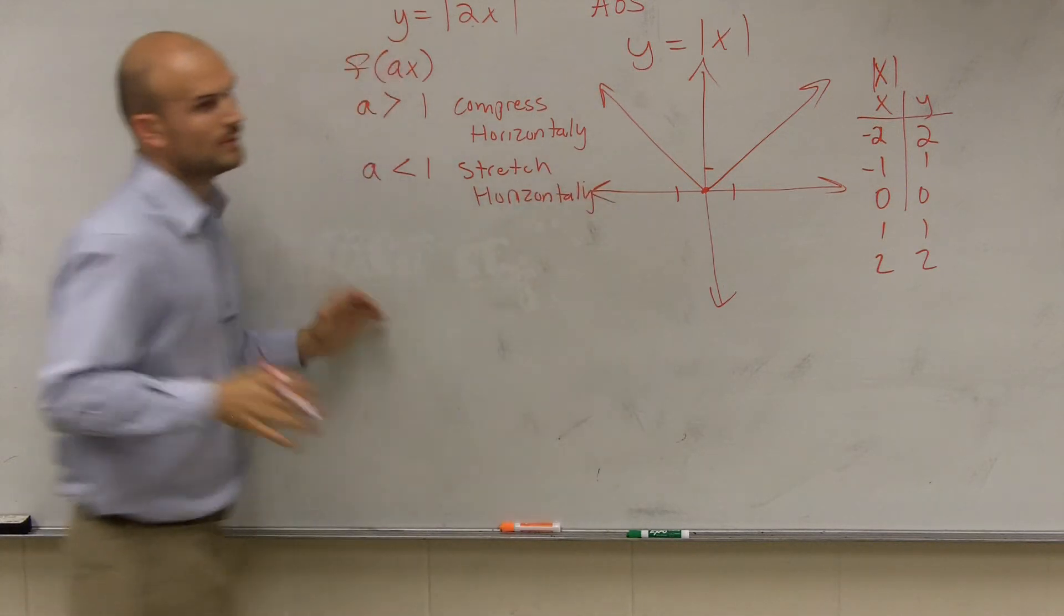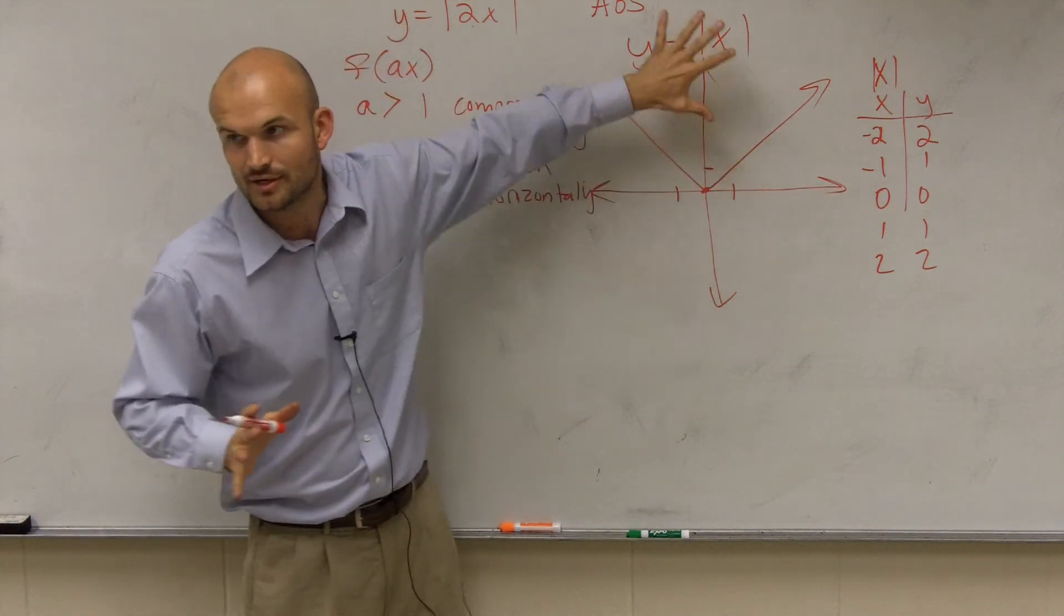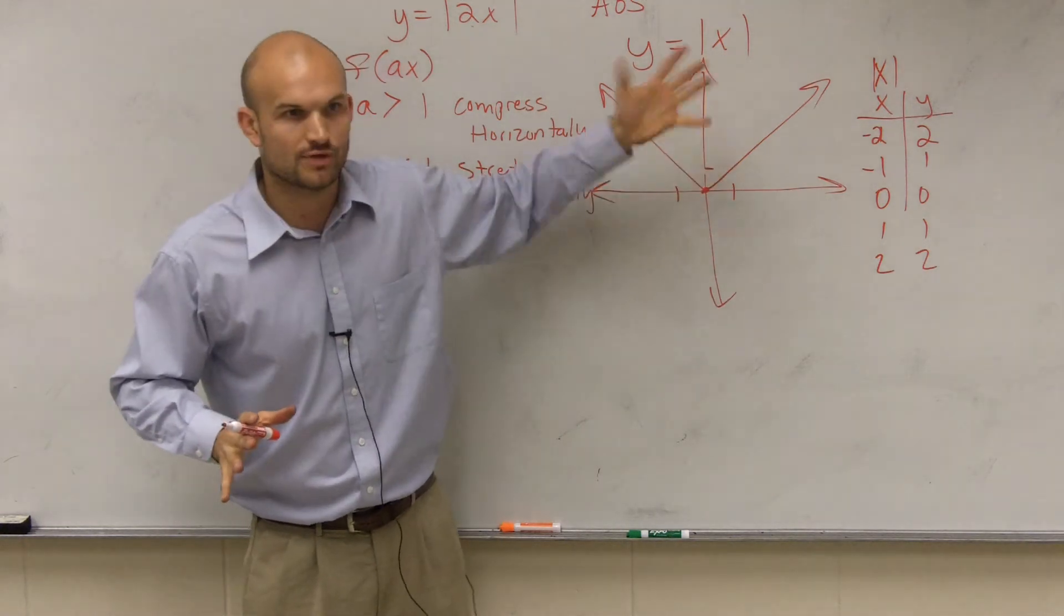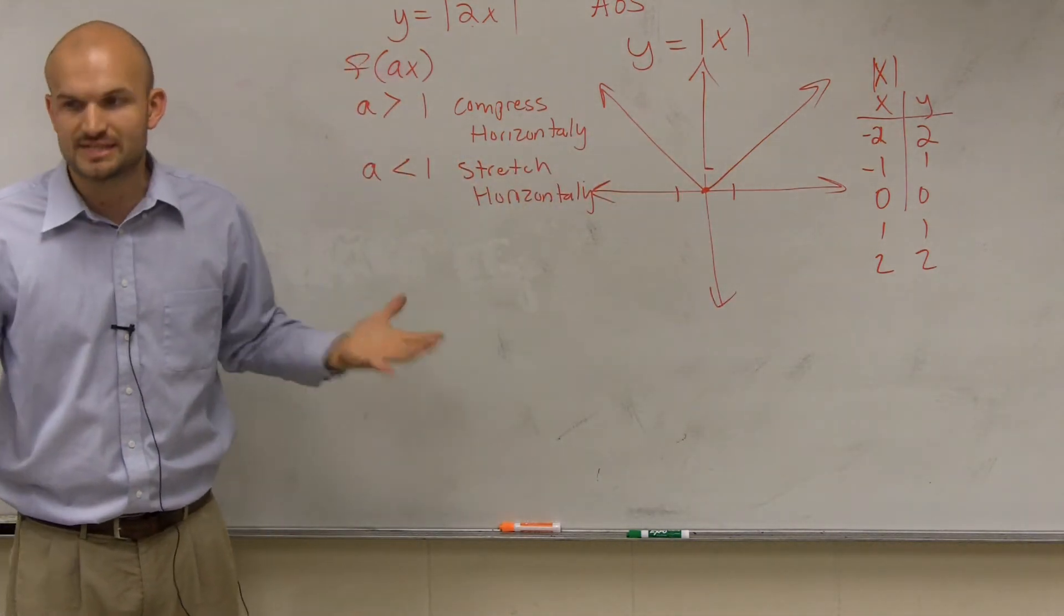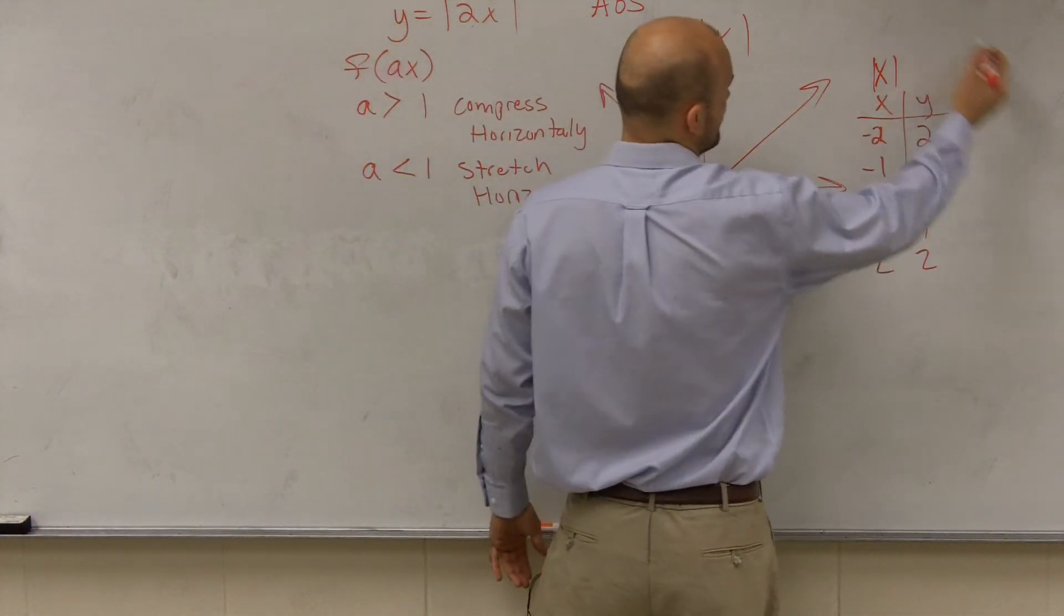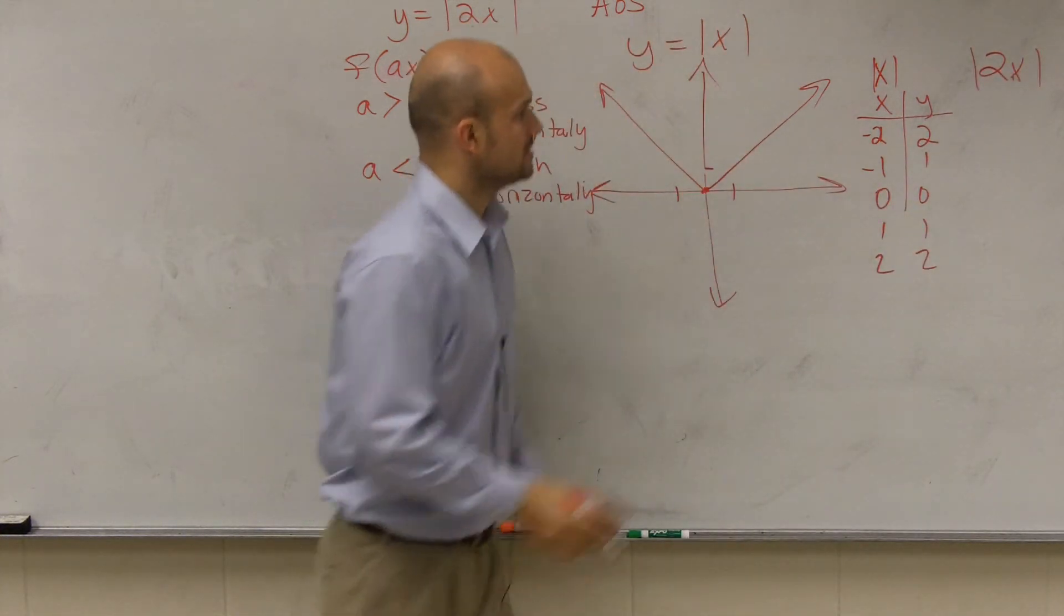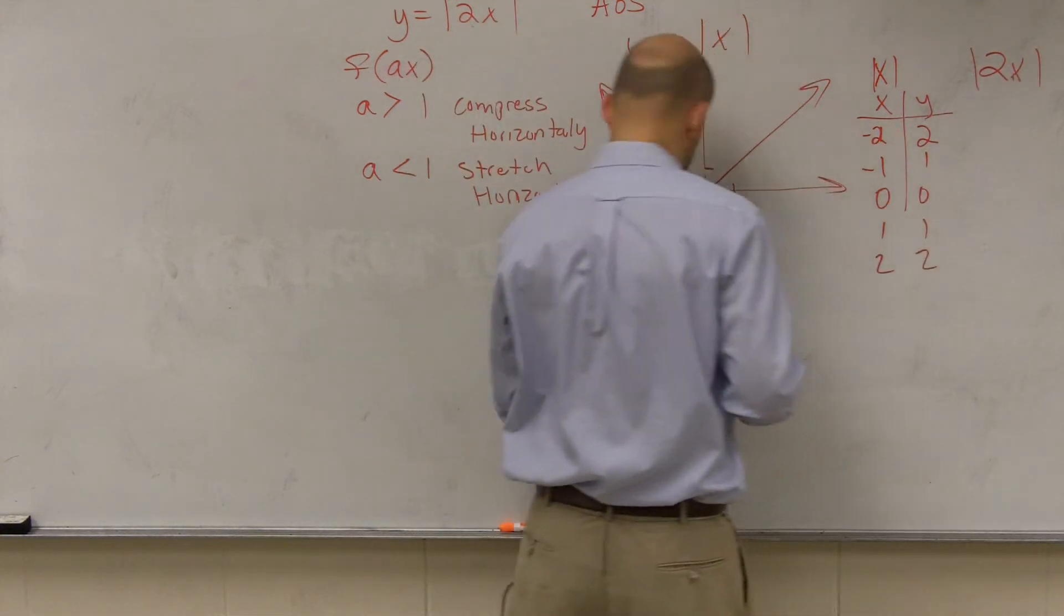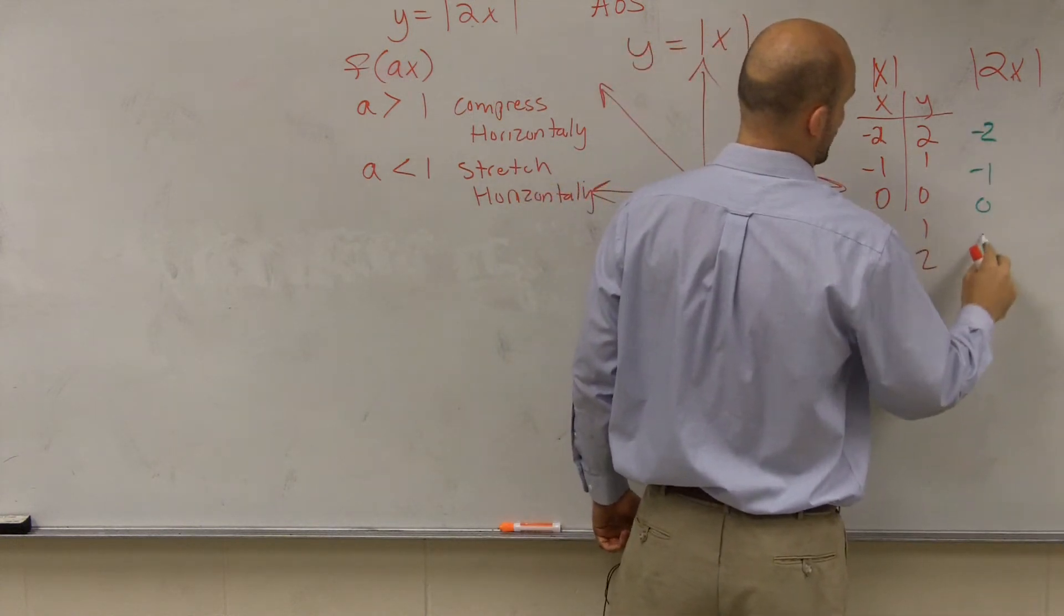Now, ladies and gentlemen, when we did the transformation, that was easy to graph, right? You shift left, shift right. All you do is you kind of take this like a picture and you just move it, right? Or you reflect it. However, when you do dilations, you've got to determine different points. Rather than do an absolute value of x, we're now doing absolute value of 2x. So your x coordinates remain the same. Negative 2, negative 1, 0, 1, and 2.